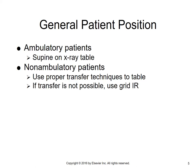General patient position: ambulatory patients are supine on the x-ray table, whereas non-ambulatory patients use proper transfer techniques to put them on the table. If it's not possible, you can always use a grid IR placed directly underneath the patient.